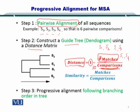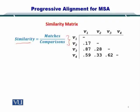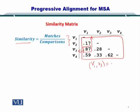Now you want to move to the third step: you need to create a branching order to represent the distances. Similarity is equal to matches over comparisons. If you look at this similarity matrix, you can see that amongst all the values, the highest value is 0.87, and this is between V1 and V3. So V1 and V3 are very similar, with a similarity score of 0.87. Next, you have 0.62, which is the similarity between V3 and V4.